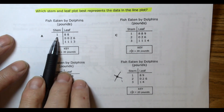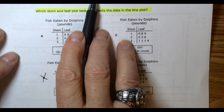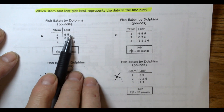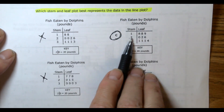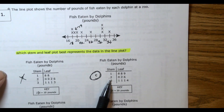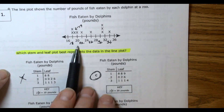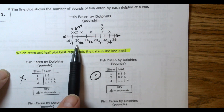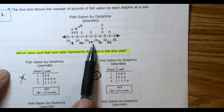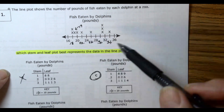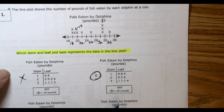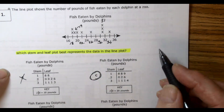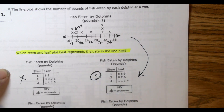Looking at A, it has two 18s but it doesn't have the 19, so we can throw that out. Our correct answer is C because it has 18, 18, and 19. We can double-check: it has 20, 22, 26, and values at 31, 31, 31 — since those X's fall between 30 and 32 — and one at 34. We've confirmed all plots on the line plot match this stem and leaf plot. C is the correct answer.